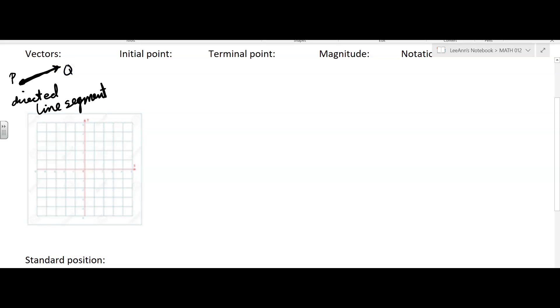And maybe we'll call the end point Q. So that's kind of common to use P and Q for the two points, but the initial point in this case would be P, or where it started from, and the terminal point would be Q, where it ended. And we know which one's the initial point and which one's the terminal point because of the arrow drawn on the vector. That shows which way it's going.